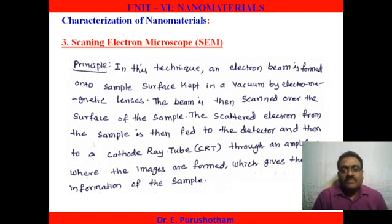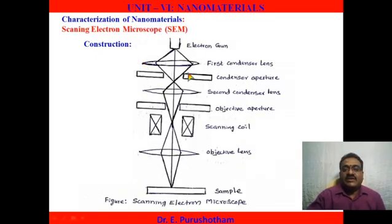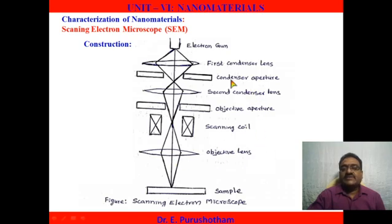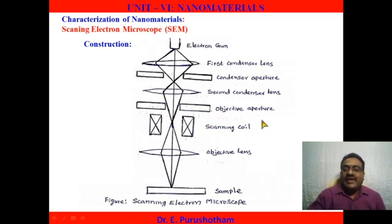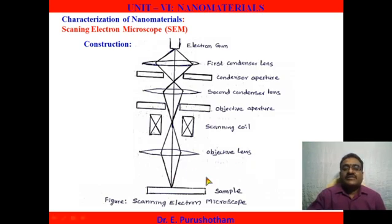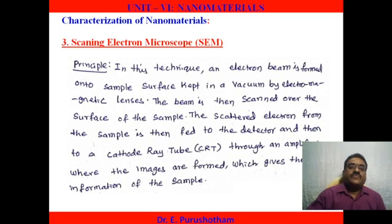What is the working principle of scanning electron microscope? You can observe this figure. The electron beam passes through the first condenser lens, second condenser lens, and objective lens. These lenses are known as electromagnetic lenses. The cathode ray tube scans the sample surface and gives rise to a sample image, from which we can characterize the sample characteristics.